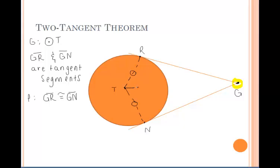I constructed radii TR and TN. We know that all radii in a given circle are congruent, and those two segments are congruent. And then I constructed segment TG. We can use reflexive property on that segment.